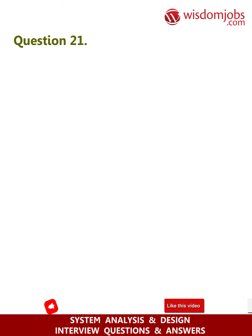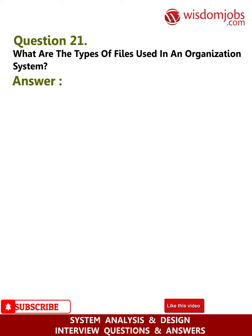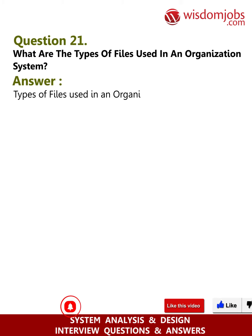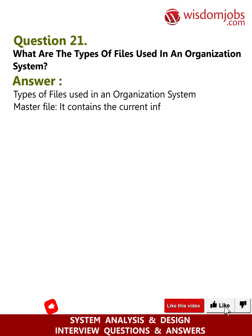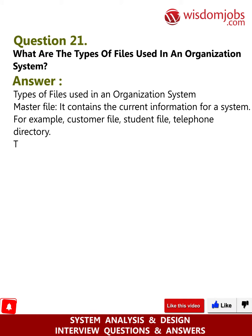Question 21: What are the types of files used in an organization system? Answer: Types of files used in an organization system. Master file: it contains the current information for a system. For example, customer files, student file, telephone directory.